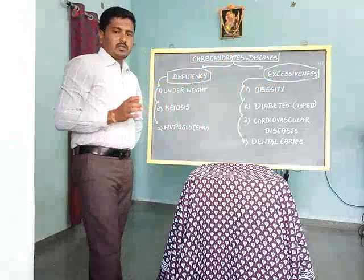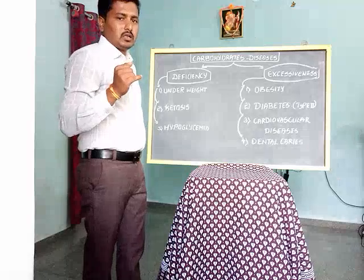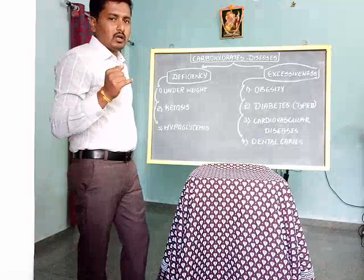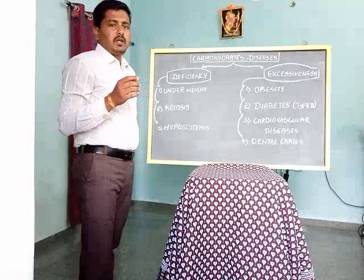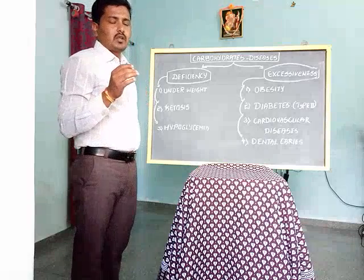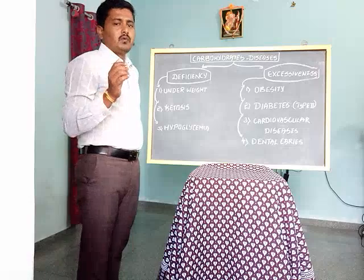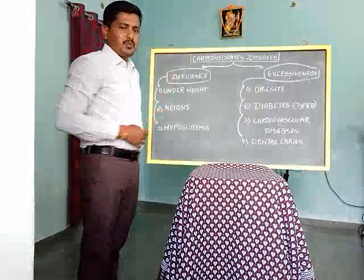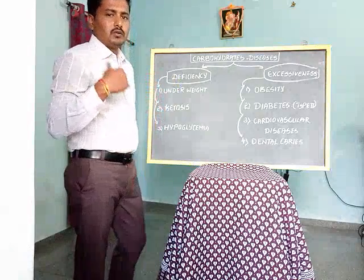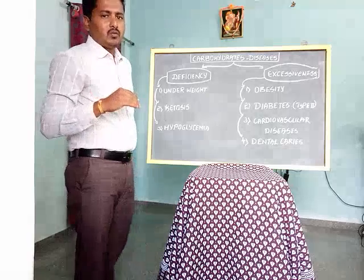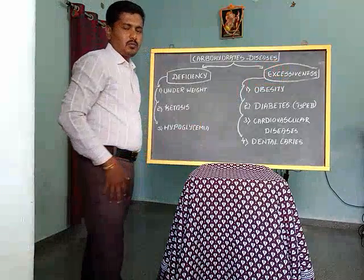Deficiency means if the daily recommended dietary allowance (RDA) for carbohydrate is less than 100 grams, that will be called a deficiency of carbohydrate. More than the normal requirement will be called excessiveness of carbohydrate.